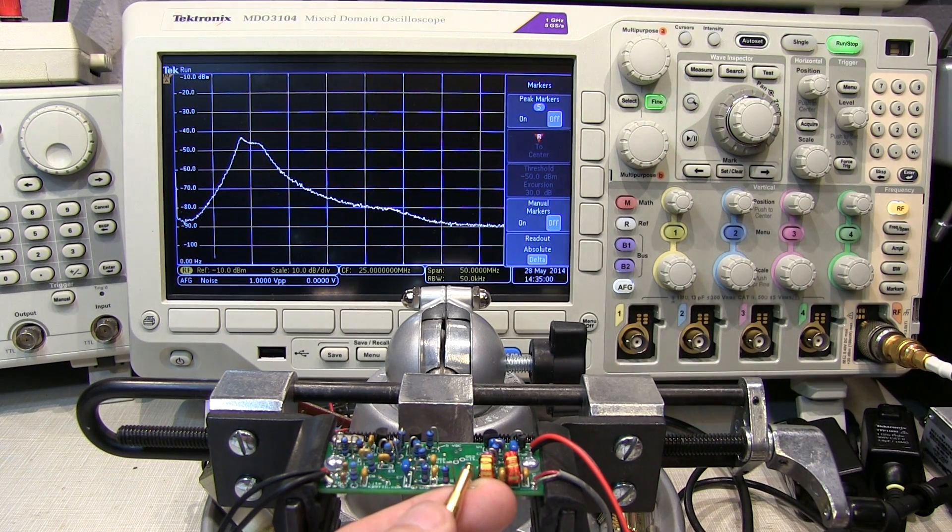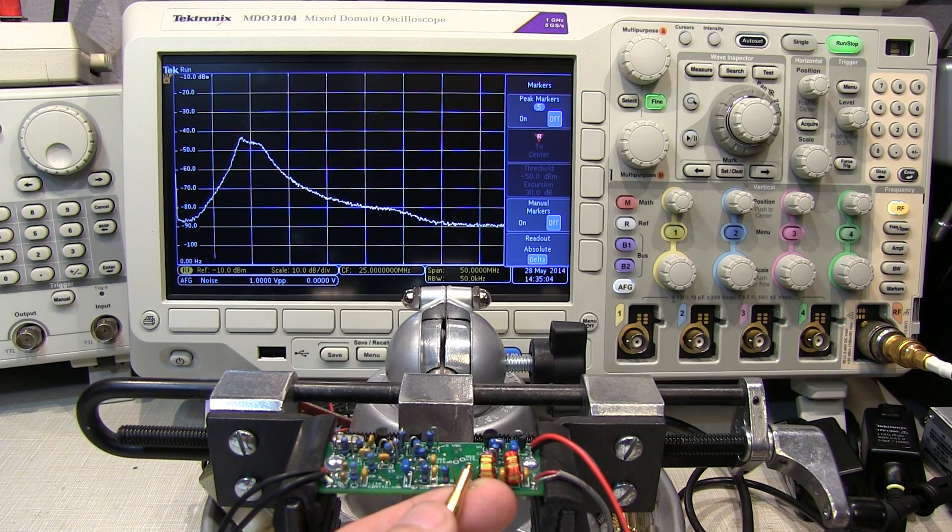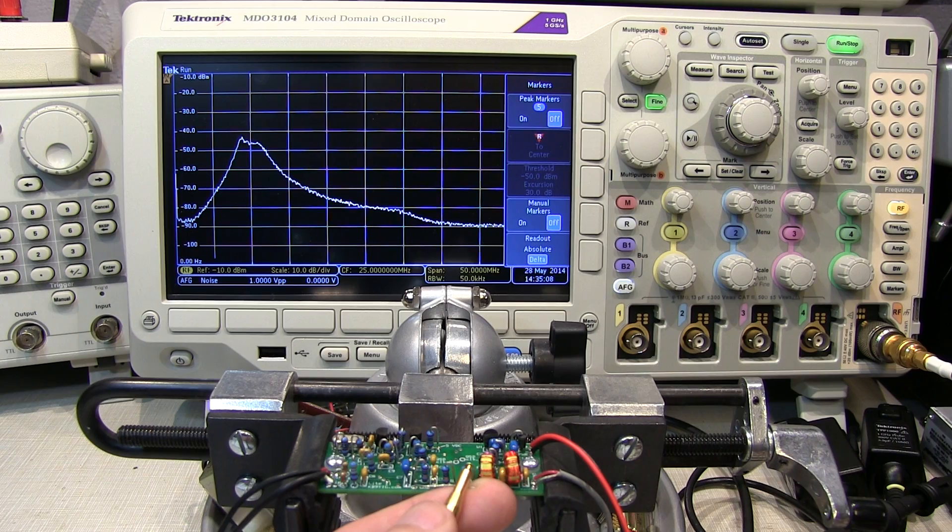So this filter is going to be an adequate bandpass filter for the 30 meter amateur radio band which is centered around 10.1 MHz or so.